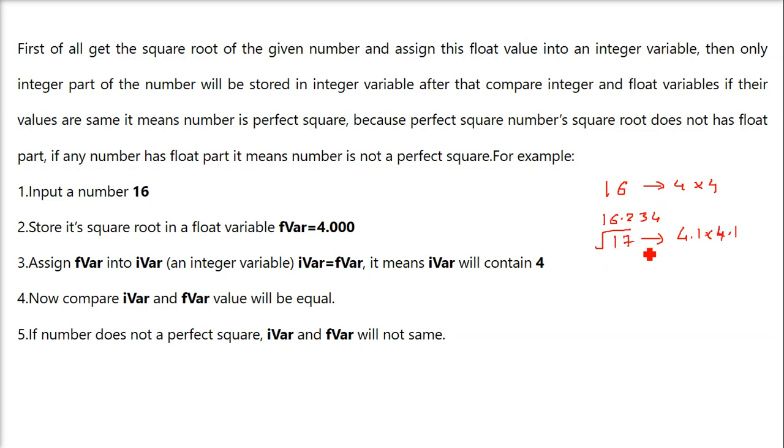So how we are going to deal with this, first of all we will input the number 16 or whichever number is given. Now we will store this square root in a float variable. That is we want this float number, we want the result. Even if 4 is there, the square root comes as 4, we want it to be 4.00.